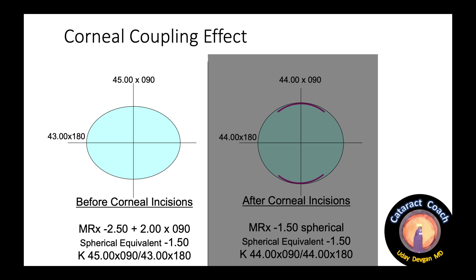The average corneal power is 44. Look at the refraction — two diopters of astigmatism. The spherical equivalent of the refraction is minus 1.50. So that's before.